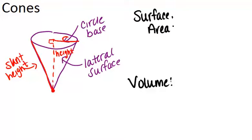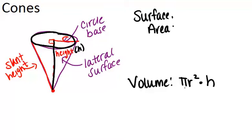So in this case the area of our base, since the base is just a circle and the area of a circle is pi r squared, the area of our base is just pi r squared. Then we'll multiply that by the overall height and divide by 3. So the volume for any cone is pi r squared times h divided by 3.